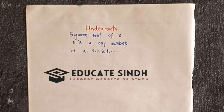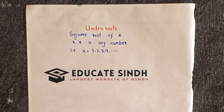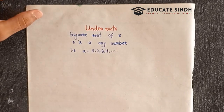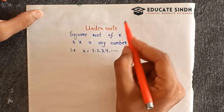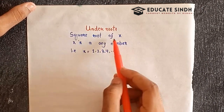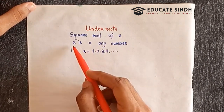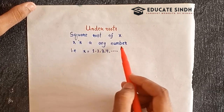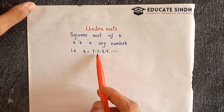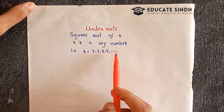Hello everyone, welcome to the last video of this series. Let's say Mathematics — specifically, let's talk about under root, which is the square root. The square root is the root of x, where x is any number such as x equals 1, 2, 3, 4, and so on.